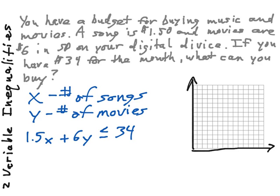Now how many movies can we buy? In order to graph this, the easiest way is to set up your simple table of values of x and y, if x is 0 and if y is 0. So if x was 0, we'd have 6y is less than or equal to 34. We're going to solve this as if it were an equation, and y is going to be 5 and 2/3.